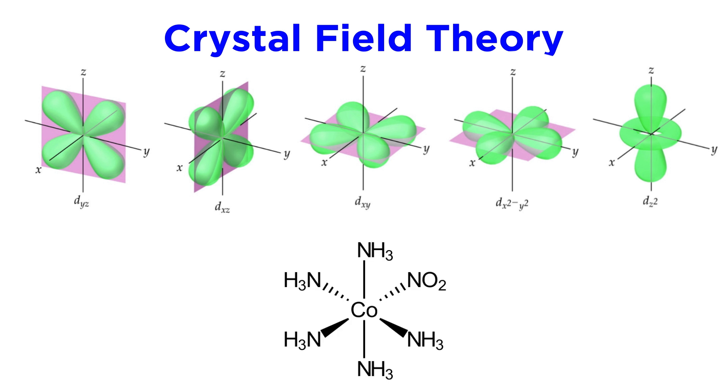To understand why, let's look at this octahedral complex, a very common geometry for coordination compounds. The central metal atom has valence electrons in these d orbitals, which when unhybridized, look like this.